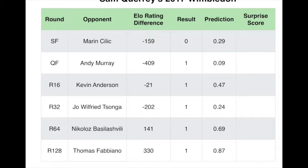We can then sum those up to get a total surprise score for the tournament for that player. A more positive number means a surprising win; a more negative number means a very surprising loss. For Querrey, we can see he had two matches where he had plus 70% surprise — that was in the round of 32 against Sagna — and the most surprising result was his win over Andy Murray in the quarterfinal. We can use the same method for all of the players that competed at Wimbledon.